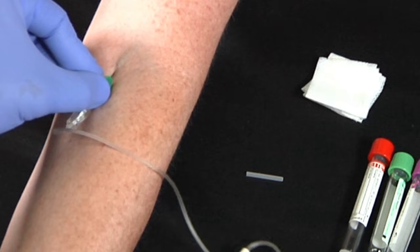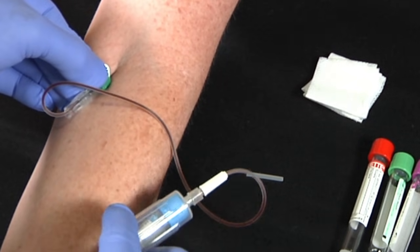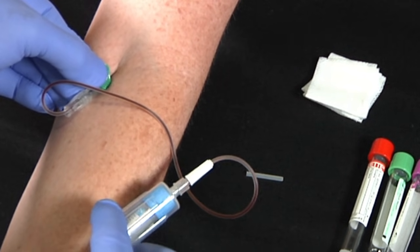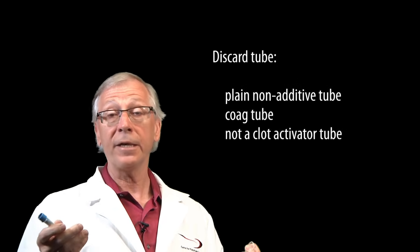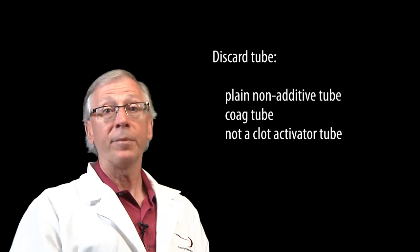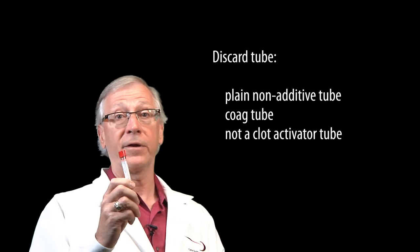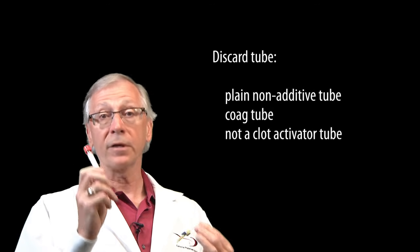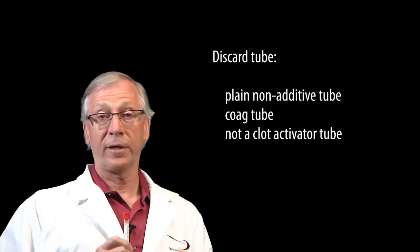But if you prime the tubing first by applying a discard tube, all the air in the tubing goes into a tube you'll be throwing away, not one you'll be testing. The discard tube can be a plain non-additive tube or another coag tube, but just don't use a clot activator tube. It has to be either another coag tube or a tube with nothing in it.